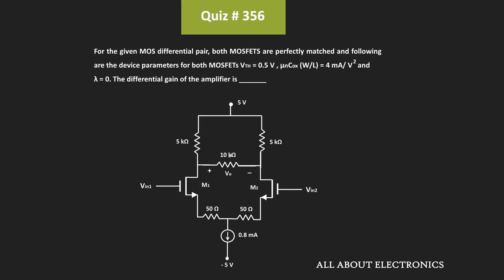Hey friends, welcome to the YouTube channel all about electronics. In this question, we have been given this MOS differential pair and we have been given that two MOSFETs are perfectly matched. We have also been given the device parameters of these two MOSFETs, and we have been asked to find the differential gain of this amplifier.